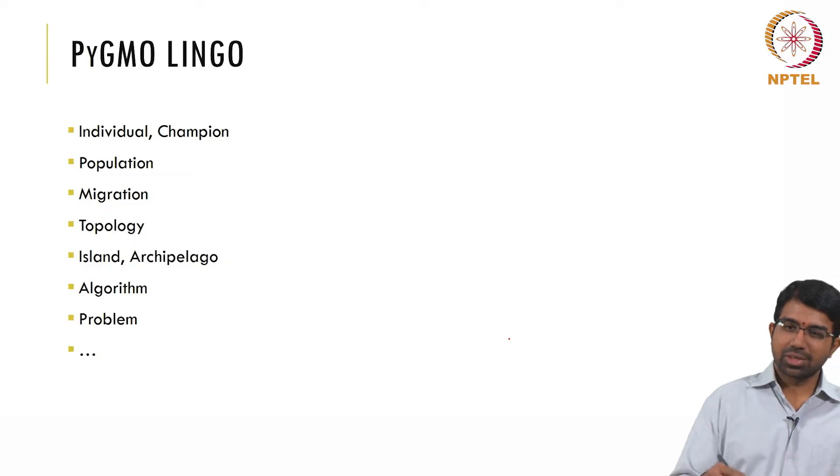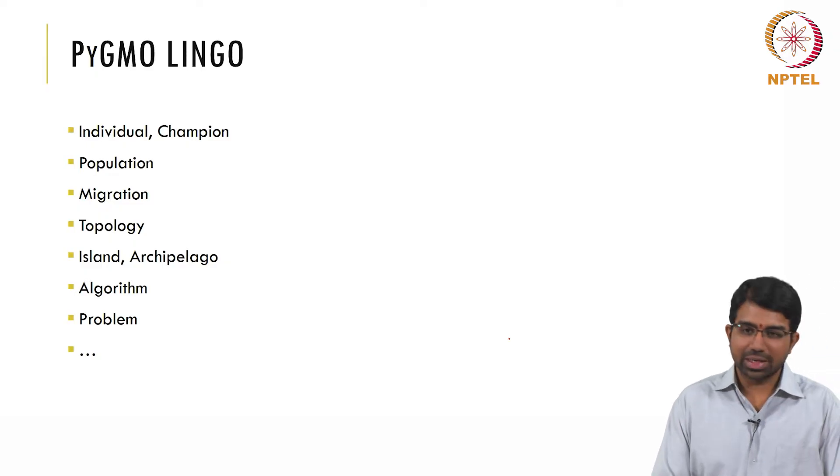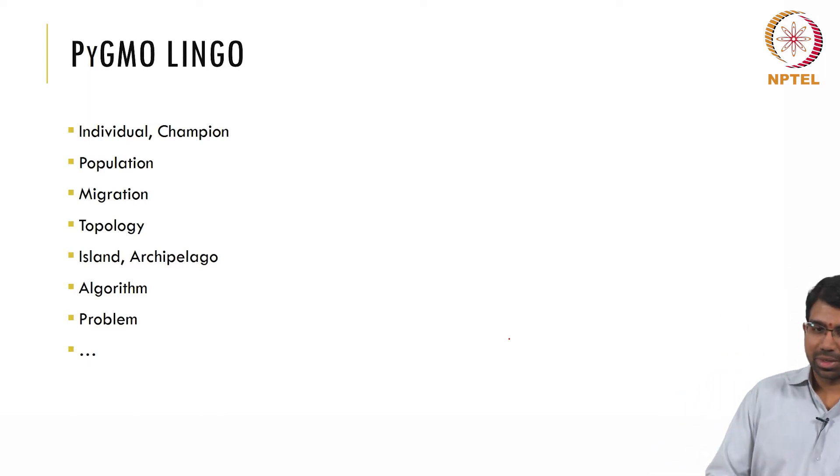So there is a lingo for Pygmo, there are individuals, champions, populations, migrations, topology, island, archipelagos, algorithms and problems. I think most of them are self-explanatory. I think you will clearly understand what individual is. Champion is the best of the individuals in a given round.